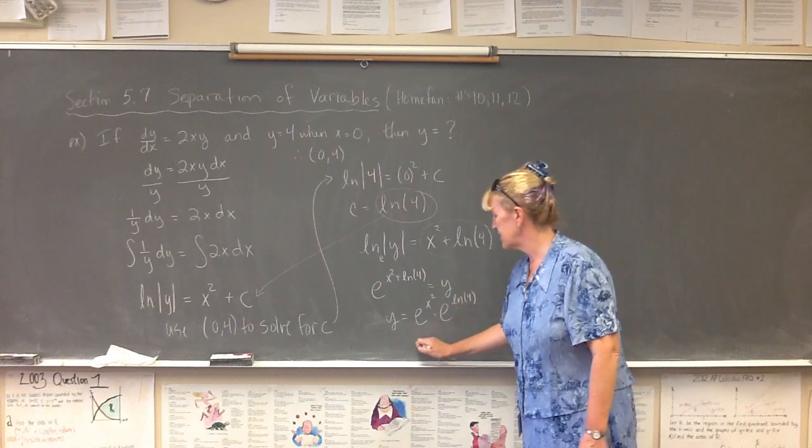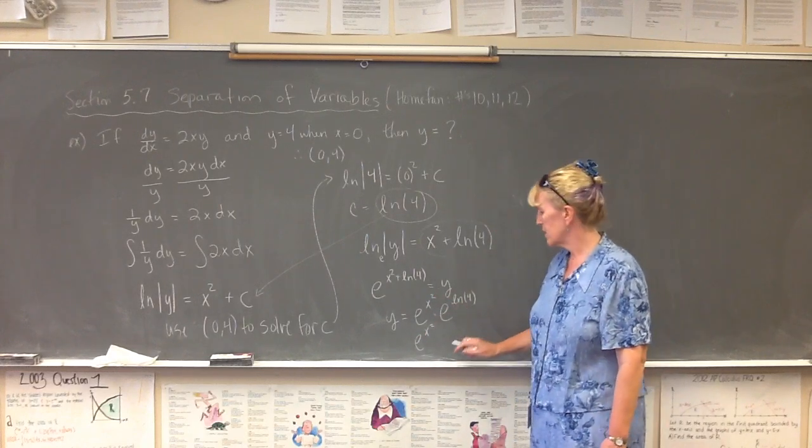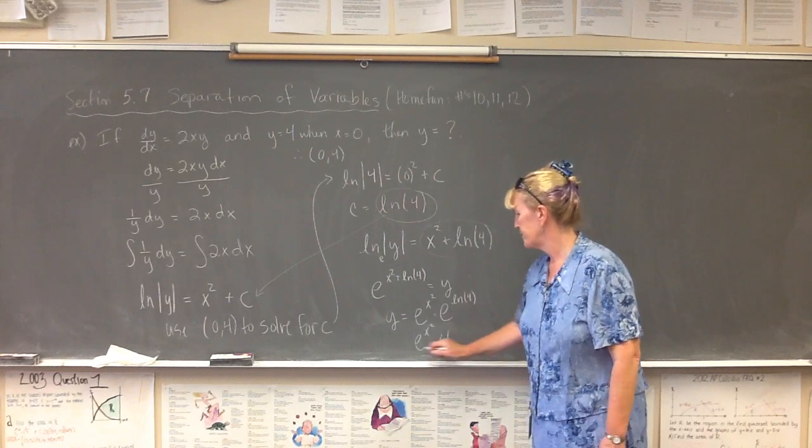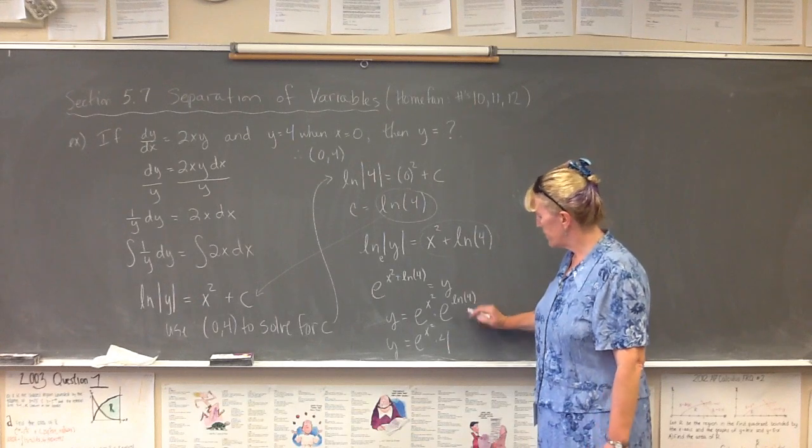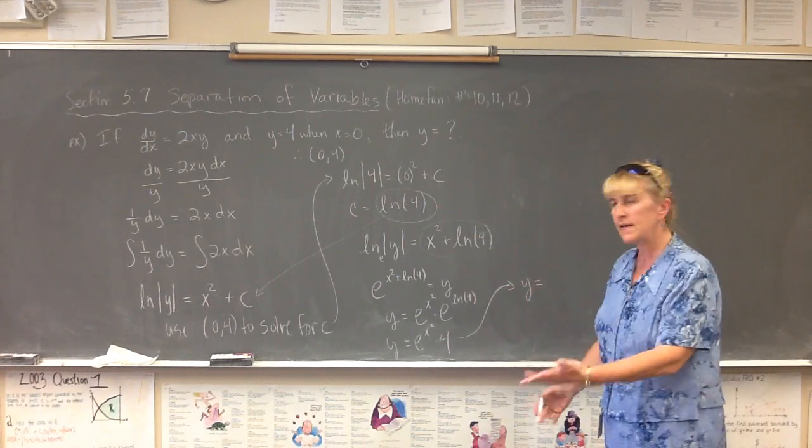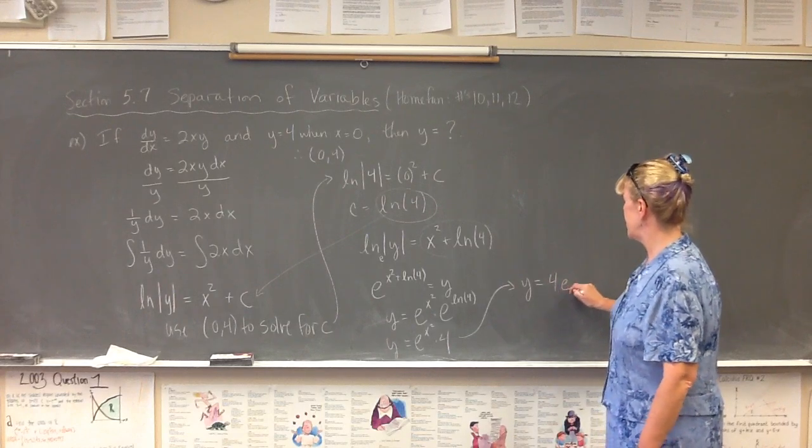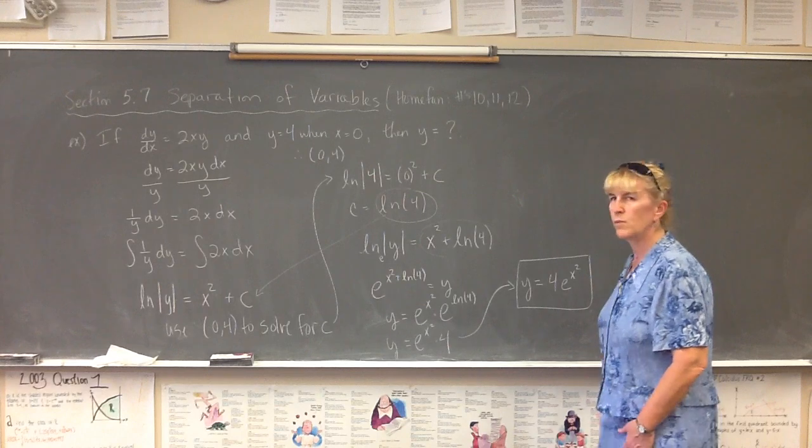This is just e to the x squared, but e to the natural log of 4 is 4. So y now equals e to the x squared times 4. And we'll wrap this up and just say y equals, we'll make it neat, 4, e to the x squared, and we are done.